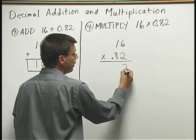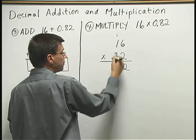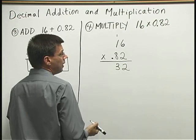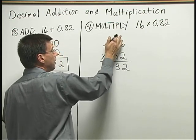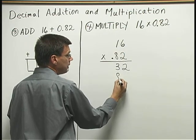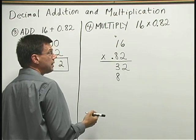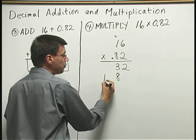2 times 6 is 12. Write down the 2. Carry the 1. 2 times 1 is 2. Plus 1 is 3. And now, I'll erase that 1 that helped me out. 8 times 6 is 48. Write down the 8. Carry the 4. 8 times 1 is 8. Plus 4 more is 12.